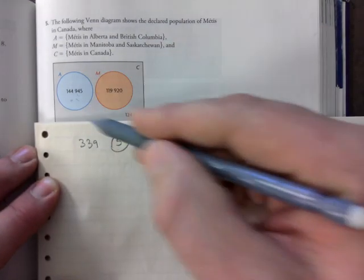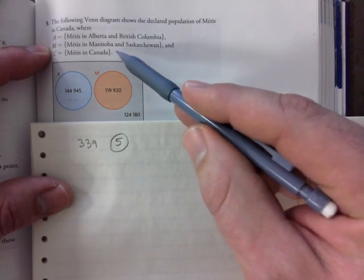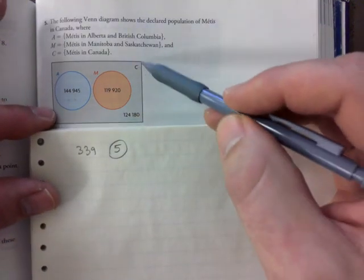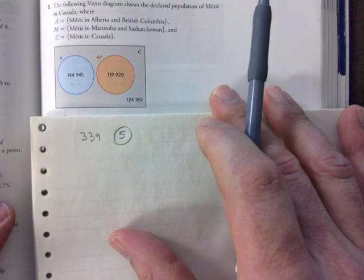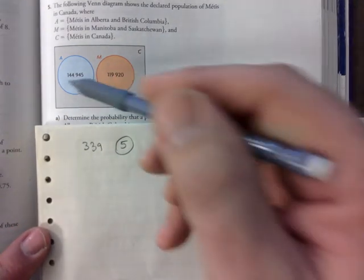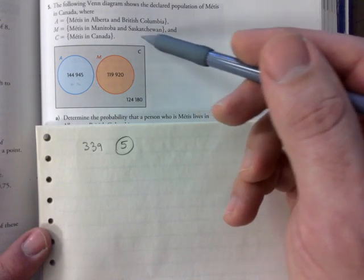Okay, so there's a Venn diagram here. A is Métis in Alberta, M is Métis in Manitoba Saskatchewan, and C is Métis in Canada. That's our universal. It's not a perfect Venn diagram because it doesn't have the universal stated - it should be some kind of number out here, but we could just add everything up and find that if we wanted to.